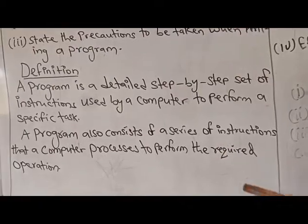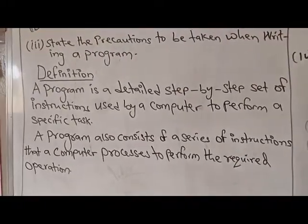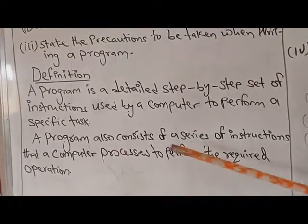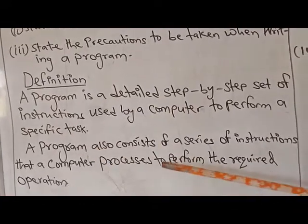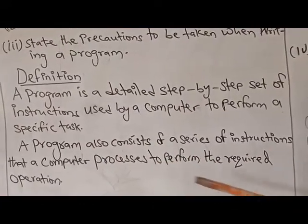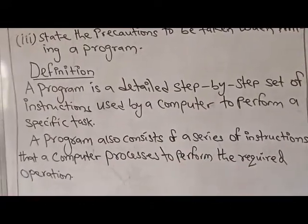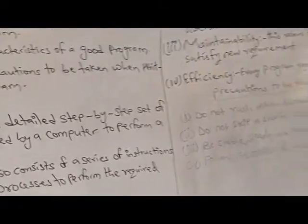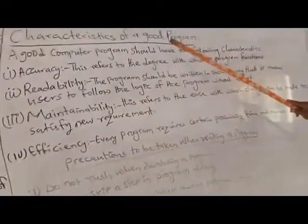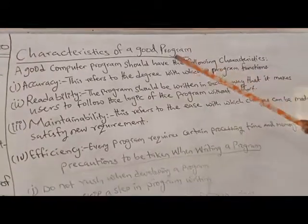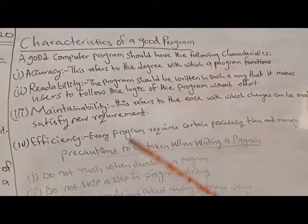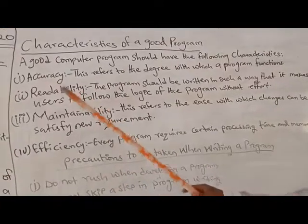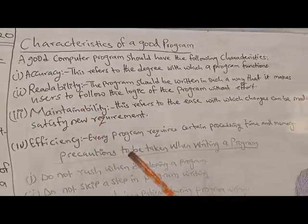A program performs a specific task — not two tasks, but a specific one. A program also consists of a series of instructions that a computer processes to perform the required operation. Now we are going to look at the characteristics of a good computer program. A good computer program should have the following characteristics. First: accuracy — it must be accurate.